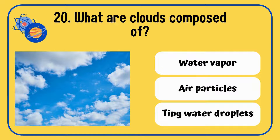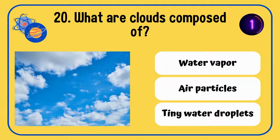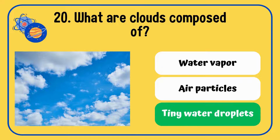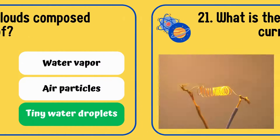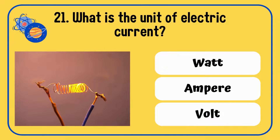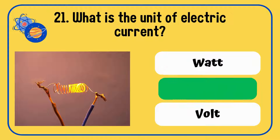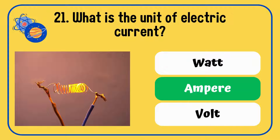What are clouds composed of — water vapor, air particles, or tiny water droplets? The answer is tiny water droplets. What is the unit of electric current — watt, ampere, or volt? The answer is ampere.